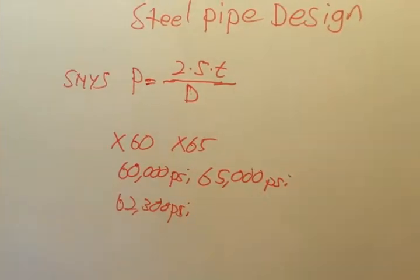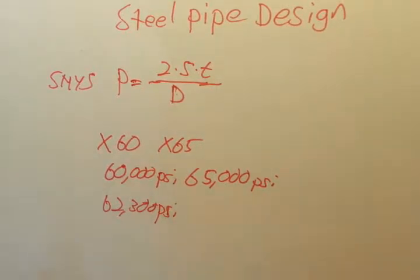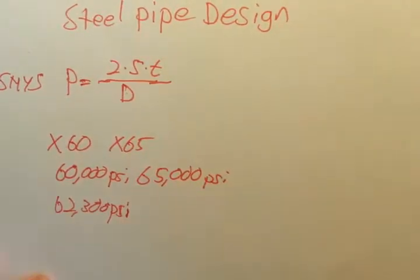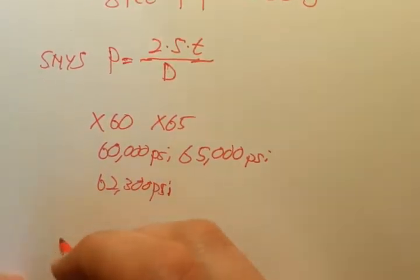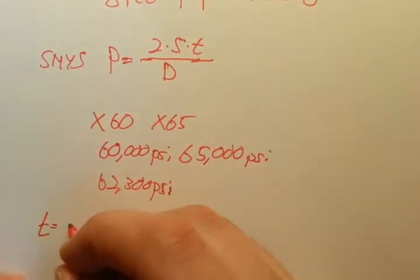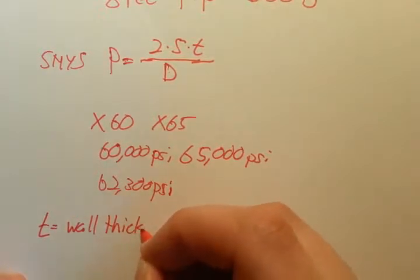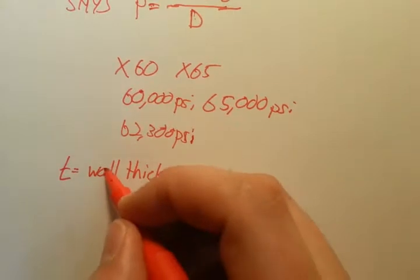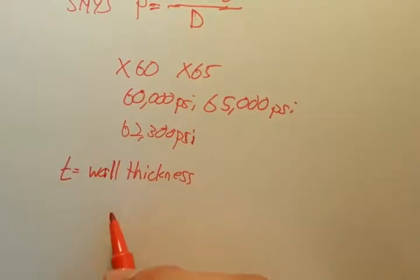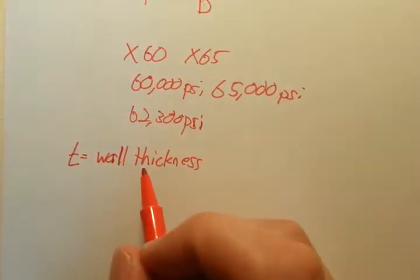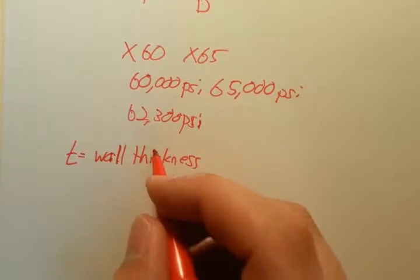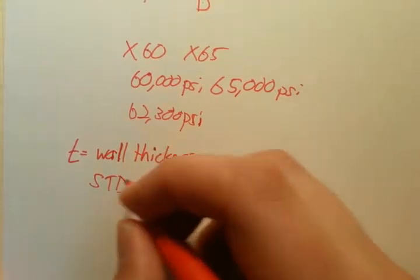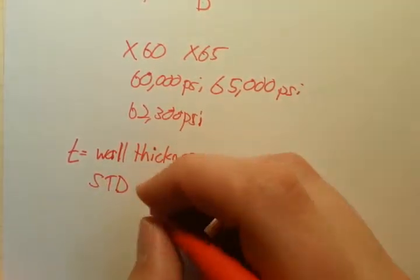Lowercase t, wall thickness, is standardized in the industry. To get that, you just go to what they call pipe charts, and they'll have corresponding outer diameters and sizes of pipe with wall thickness. A lot of people in shorthand will call it STD for standard wall thickness pipe, or SCH 80 for schedule 80, or SCH 40 for schedule 40.